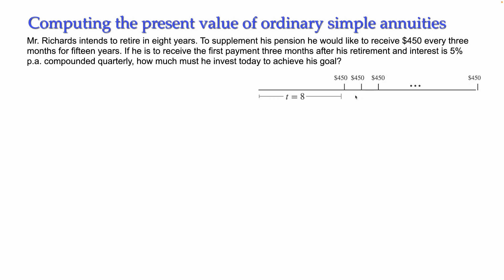To supplement his pension he would like to receive $450 every three months for 15 years. The first payment is going to be received three months after his retirement — this means it will be an ordinary annuity, where the payments are at the end of each payment interval. The question is how much he must invest today, eight years before he starts the annuity, with interest at 5% compounded quarterly.